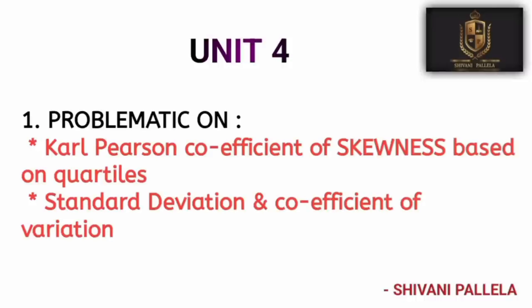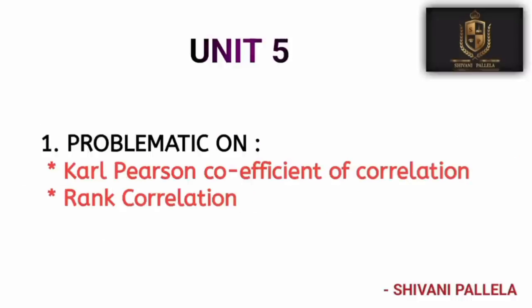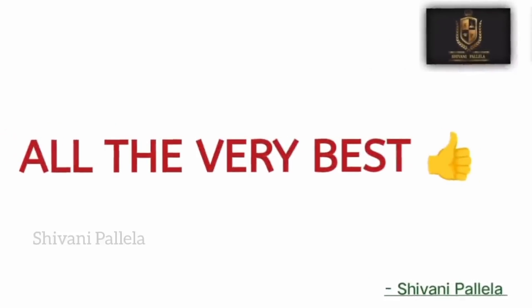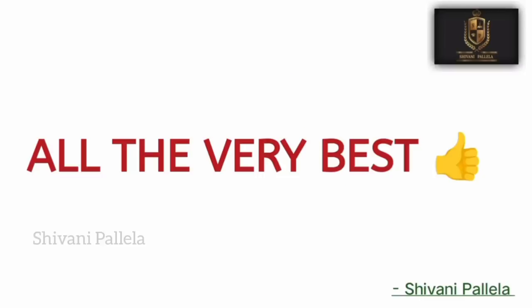Unit four is also problem-based only — no theory questions. Compulsorily there will be a problem related to Karl Pearson's coefficient of skewness and quartiles. Standard deviation is also important, but Karl Pearson is comparatively easier. From unit five, Karl Pearson's coefficient of correlation and rank correlation are the two expected problems — prepare any one method, both are manageable.